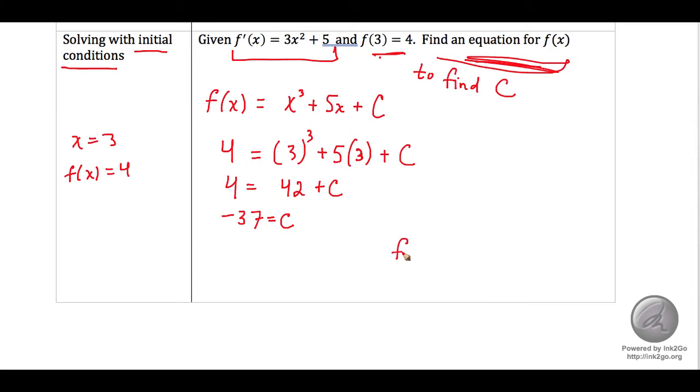So our final answer is that f of x is equal to x cubed plus 5x minus 37.